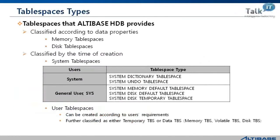The types of tablespace: first, they are mainly classified by data property — whether it is memory type or disk type. The memory tablespace is for high performance data processing and stores memory data, which resides in memory only. The disk tablespace is the tablespace generally used in most DBMSs, storing disk data which resides on disk only.